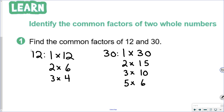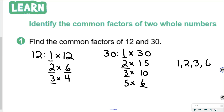Now after we have found all the factors, we look for the common factors — the ones that are in both lists. 1 is always going to be in both lists. We see that 2 is in both lists, 3 is in both lists, 4 is not in both lists, and 6 is in both lists. 12 is not in both lists. So our common factors of 12 and 30 are 1, 2, 3, and 6.